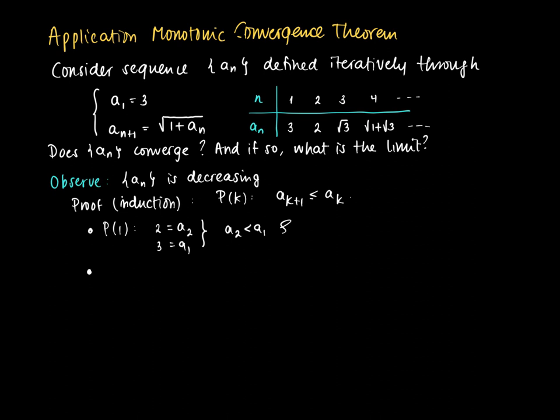Now suppose we have shown that P(k) is true for some value of k. So suppose we know that aₖ₊₁ is smaller or equal than aₖ for some specific value of k. Then we need to show that P(k+1) is true. How can we show this?